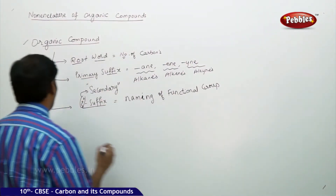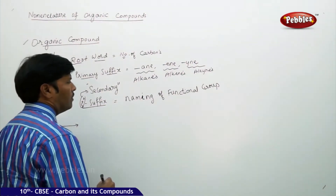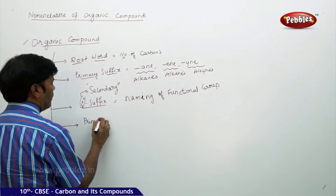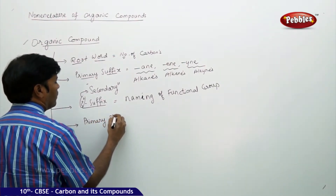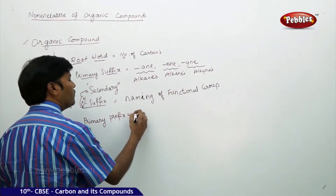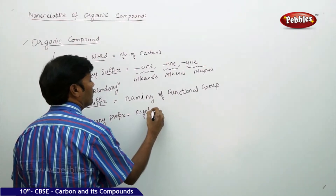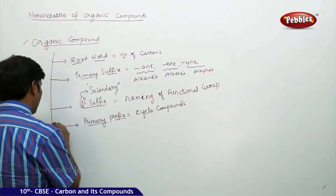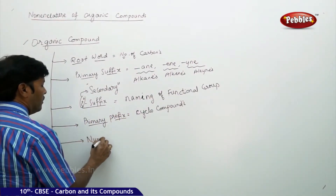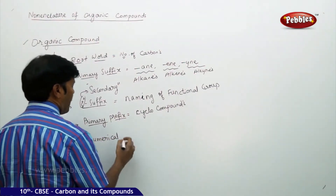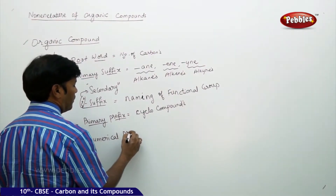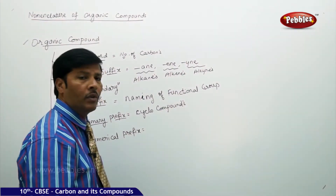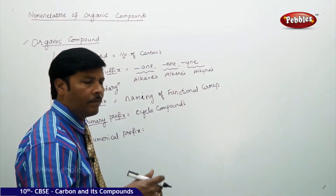Then there is the primary prefix, which is used for cyclo compounds. And the last one is the numerical prefix, which indicates the number of substituents or groups which are repeating again and again.